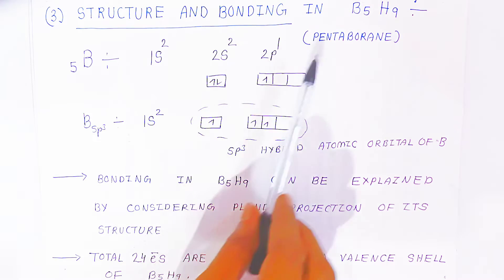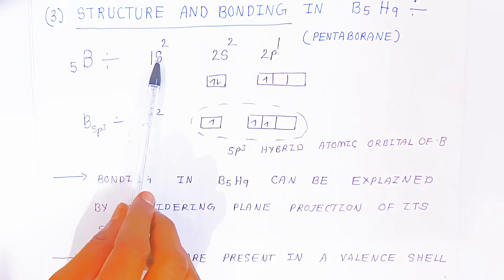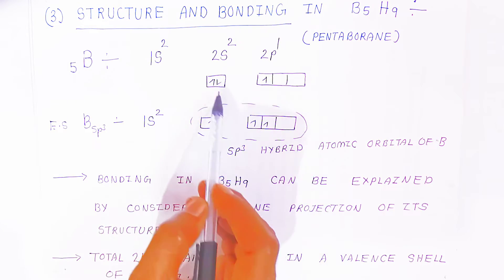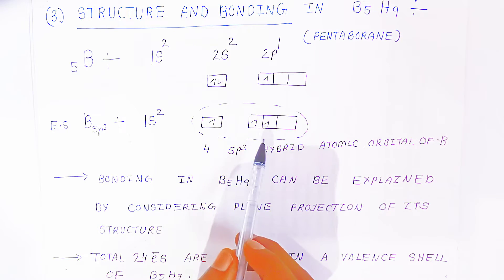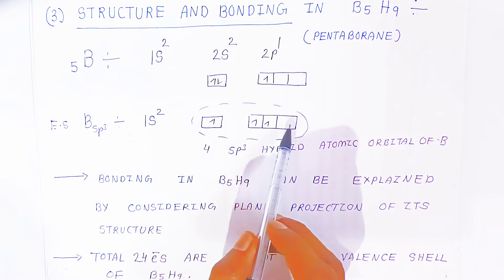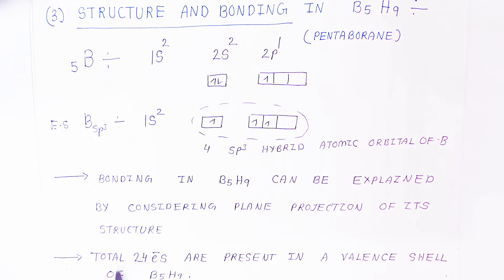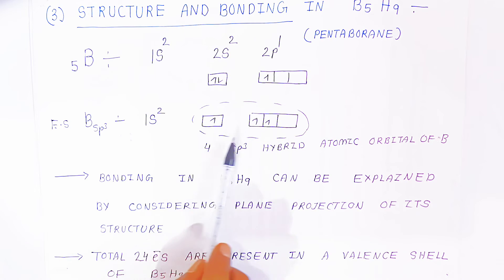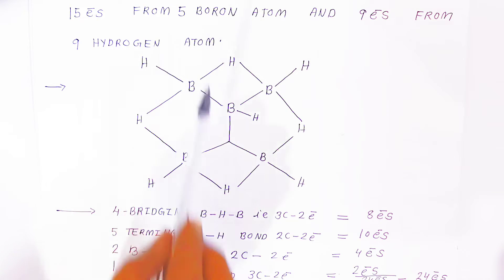Next, we examine pentaborane, B₅H₉. Boron atomic number 5 has electronic configuration 1s² 2s² 2p¹. When hydrogen approaches, excitation occurs — one electron migrates to 2p — and sp³ hybridization takes place forming four sp³ hybrid atomic orbitals, three filled with one electron and one vacant, making it electron deficient. The structure of B₅H₉ in plane projection has a total of 24 valence electrons: 15 from five boron atoms and 9 from nine hydrogen atoms.